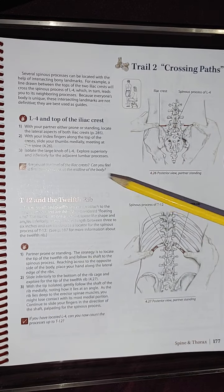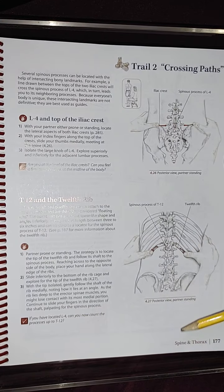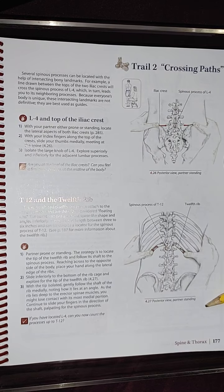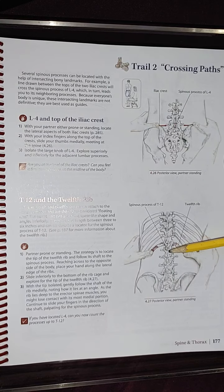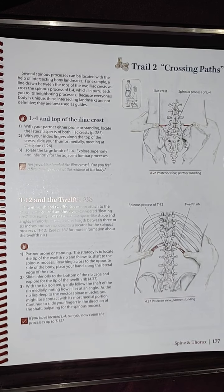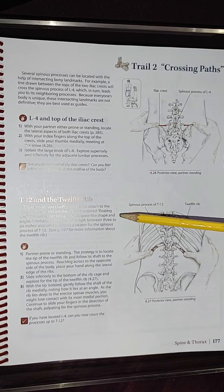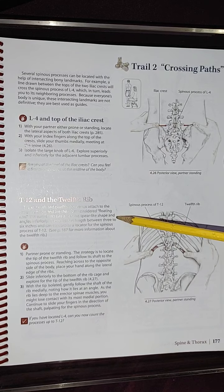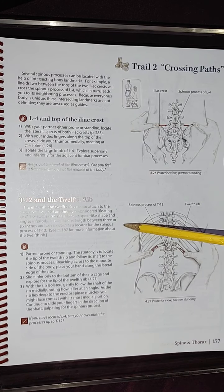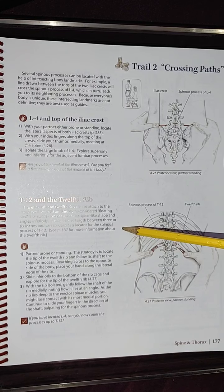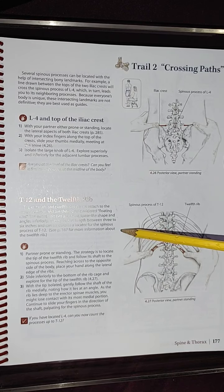Now we're going to feature image 4.27, showing a posterior view of a partner standing. As you can see, the therapist is locating the 12th rib, and here is the spinous process of T12. The 11th and 12th ribs do not attach to the costal cartilage — we have to know this by heart — and are therefore considered floating ribs. The 12th rib has a slender spear-like shape and angles inferiorly. It may vary in length between 3 to 6 inches and can be used as a locator for the spinous process of T12.